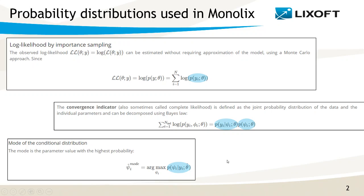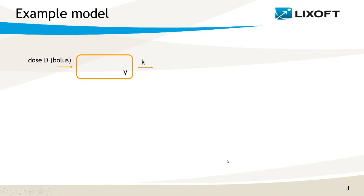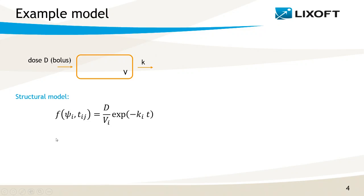So let's see what they mean, if they have a closed-form solution, and how to write them. To make it more concrete, I will consider a simple example with a model with one compartment, a linear elimination, and a bolus administration. The model-predicted concentration can be written with a decreasing exponential over time.